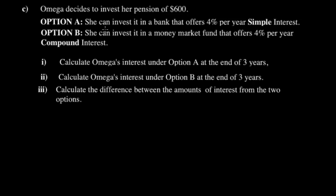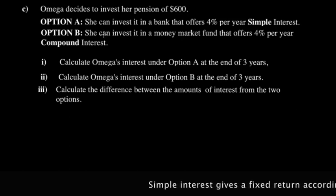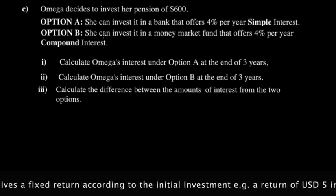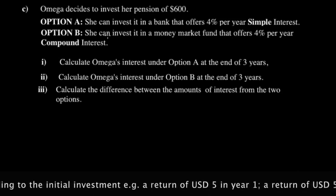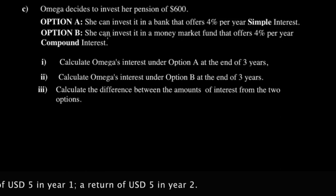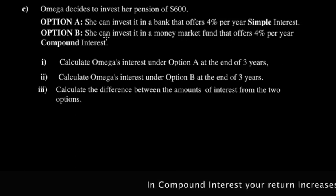Right now we're doing simple and compound interest. Simple interest is what you want to run away from in life. Simple interest is calculated as a percentage of your principal for a given time — so they give you a fixed rate, like maybe four percent. Compound interest is different: if you leave your money in the bank, the interest you earn this month would be different from the one for next month.